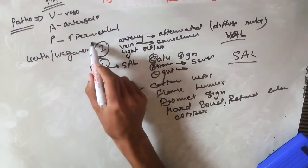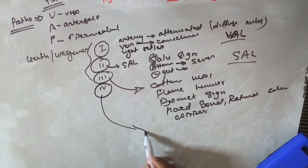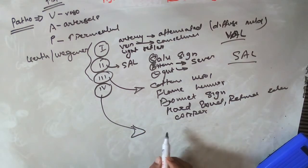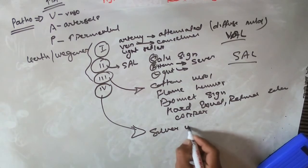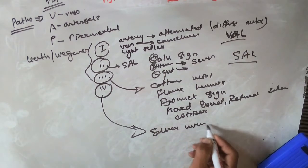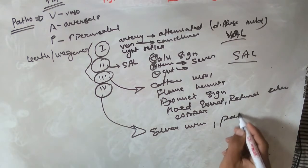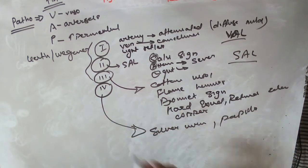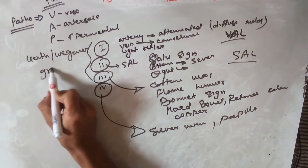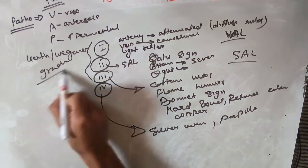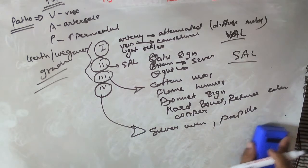Grade four includes all the features of grade three with two additional findings: silver wiring and papilledema. When silver wiring or papilledema is added to the existing features, that constitutes grade four in the Keith and Wagener grading system.